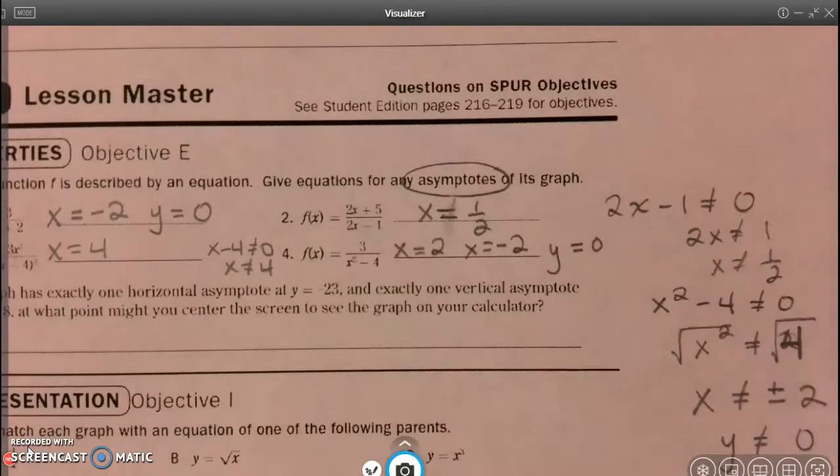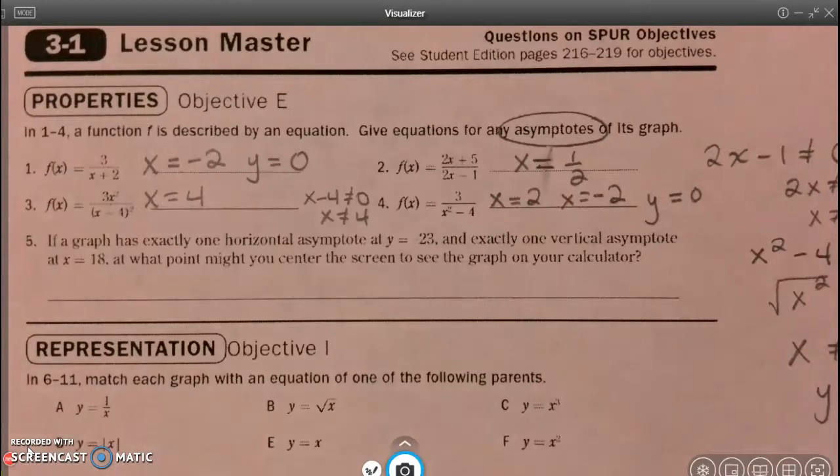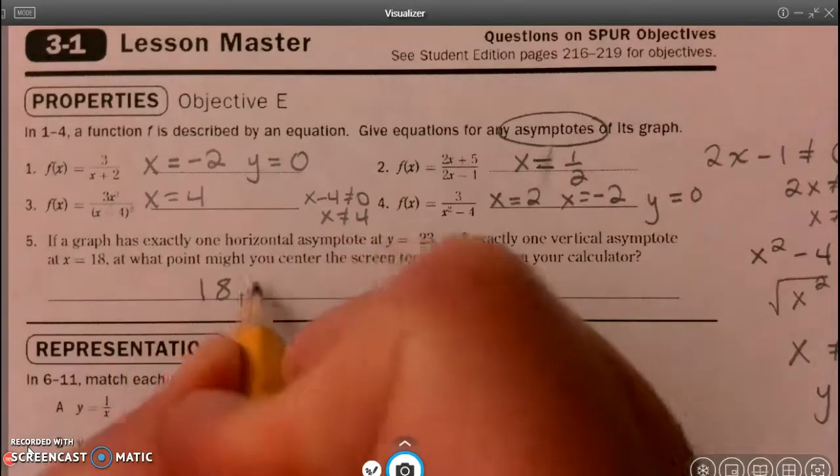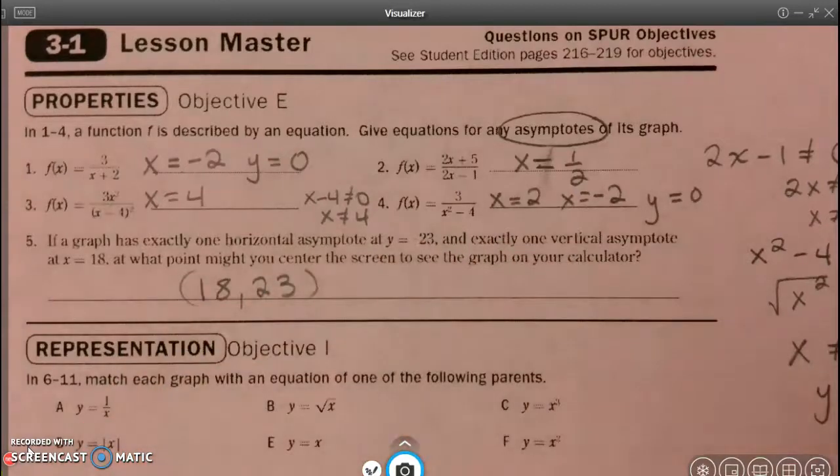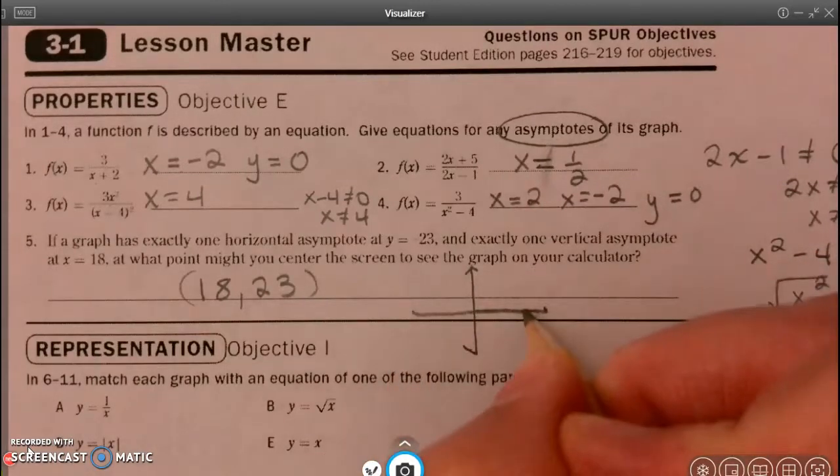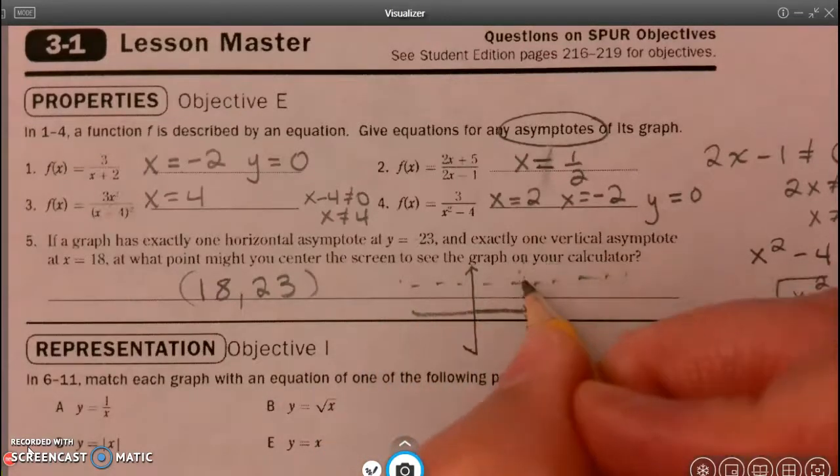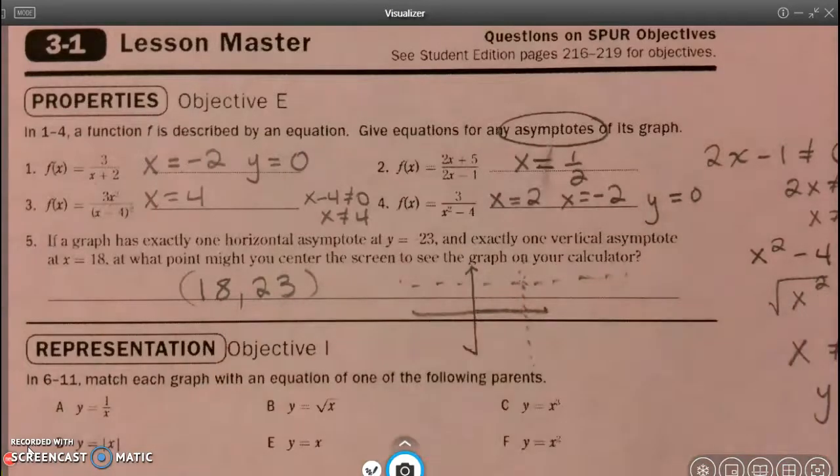All right, let's look at our next question. It says, if a graph has exactly one horizontal asymptote at y equals 23, and exactly one vertical asymptote at x equals 18, at what point might you center the screen to see the graph on your calculator? Well, I would center it at the point 18, 23, because I'm going to have an asymptote. At 18, I would have an asymptote. Let's say this was 18. That would be an asymptote. And at 23, I'd have an asymptote. And so right here could be the center of my graph, which would be the point 18, 23.